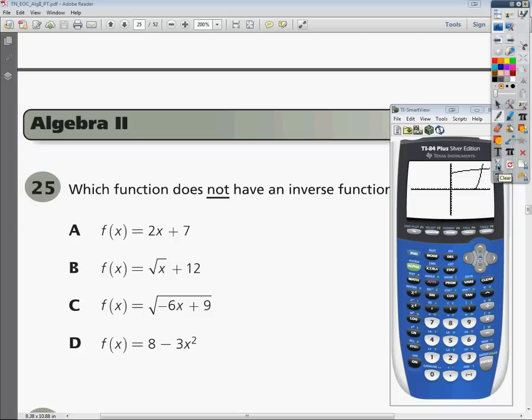The next one. Go to Y equals. Clear all this out. And then type in the square root of negative 6x plus 9. And I forgot. And I hit square instead of square root because I was not paying attention. Don't do that. Or you'll cost yourself extra time for no reason.